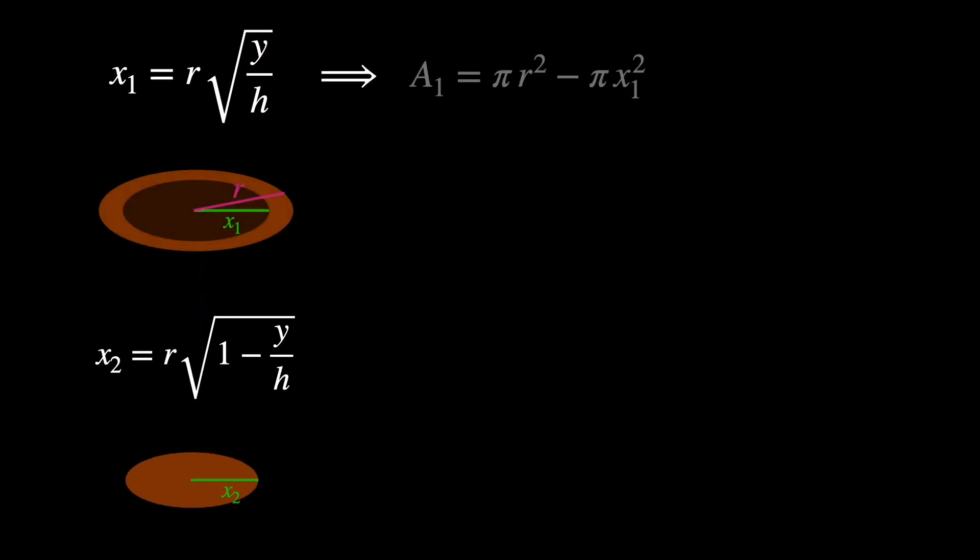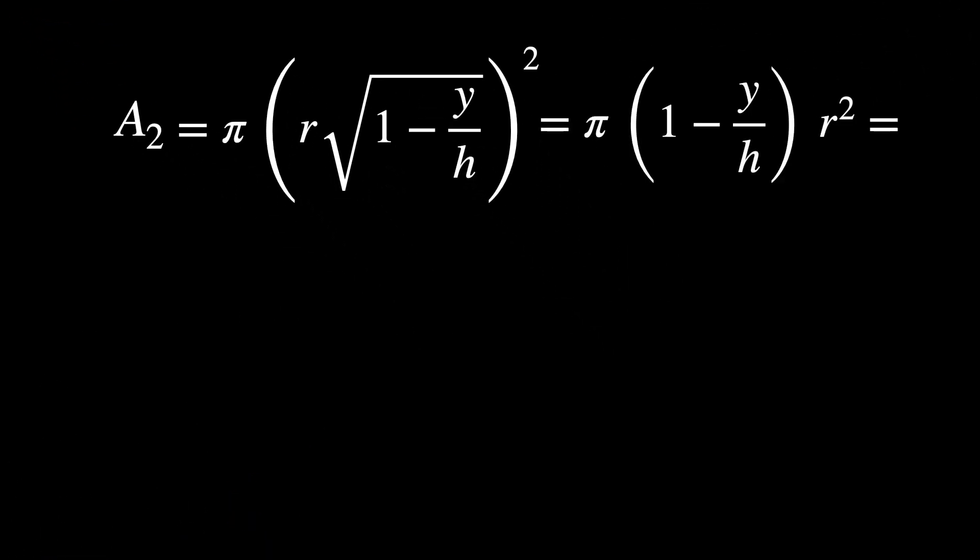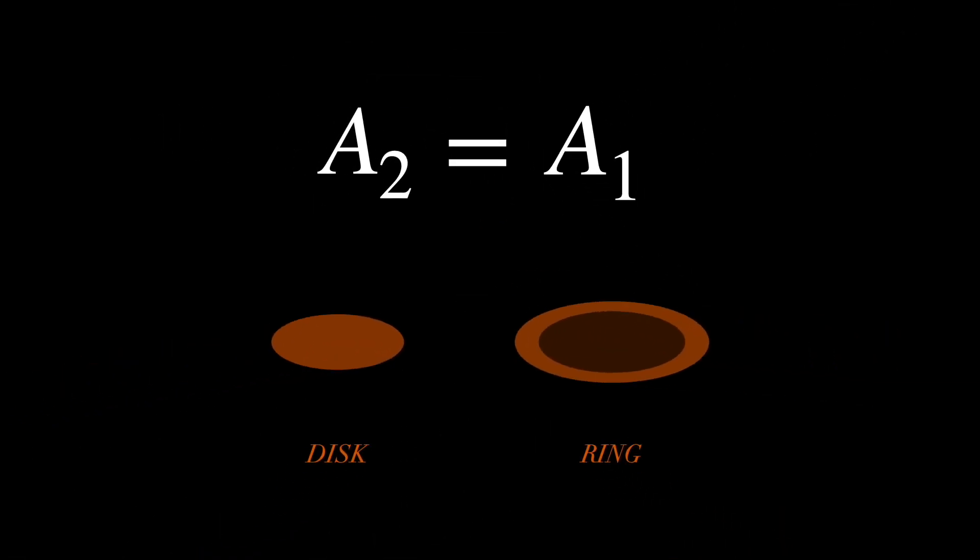Thus, the areas of their cross sections at height Y are the following: A1 for the ring and A2 for the disk. Notice that A2 can be written as follows, so it is basically the same as A1. Since the cross-sectional areas for different heights of these two solids are the same, we can apply Cavalieri's principle, which tells us that their volumes must be the same as well.